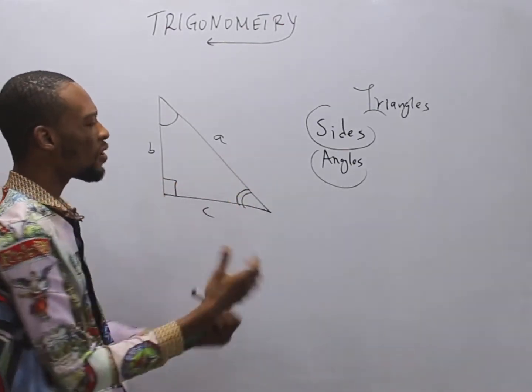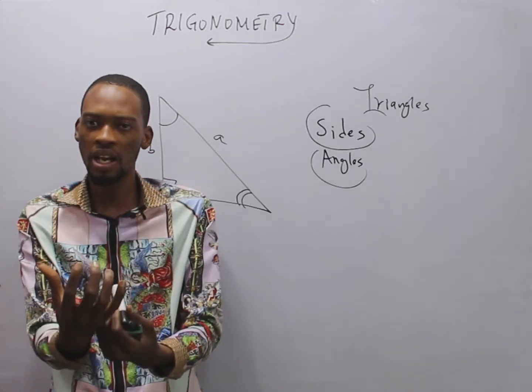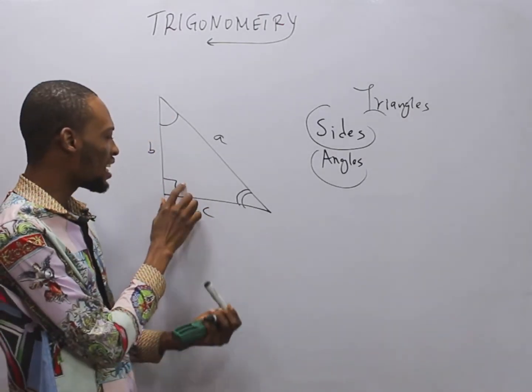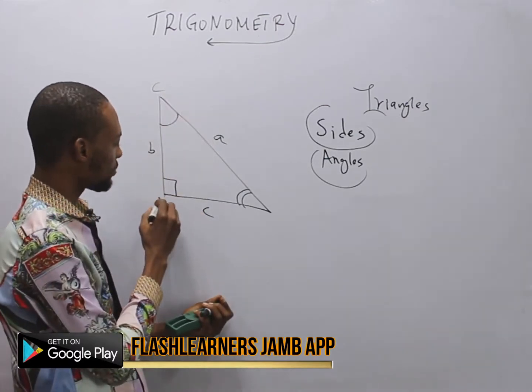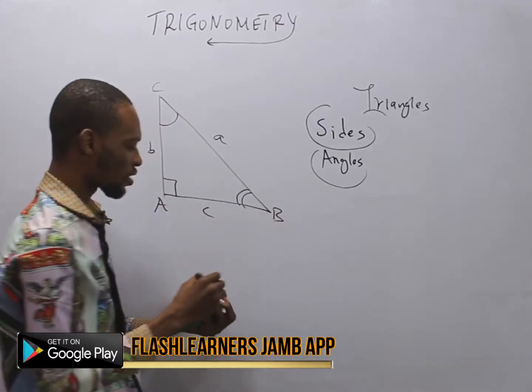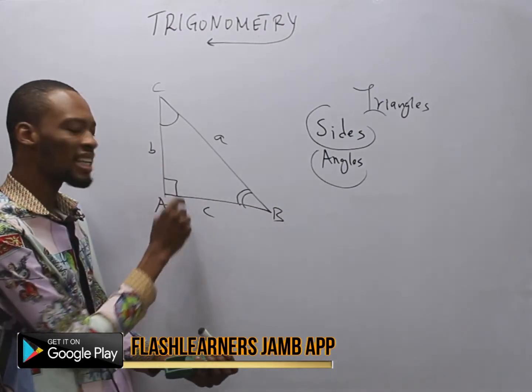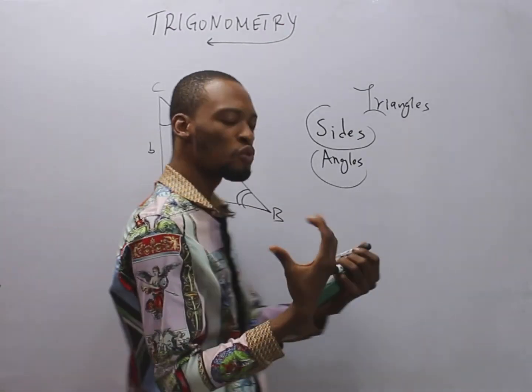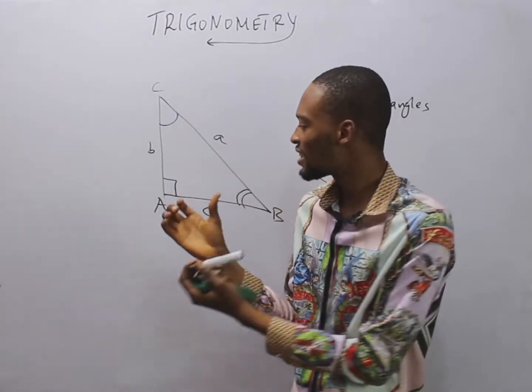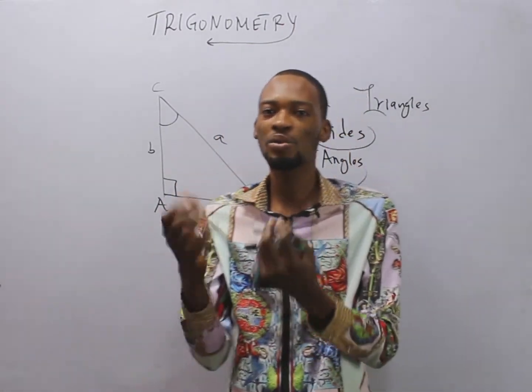This triangle is called right-angled triangle because one of the angles is 90 degrees. So let's here be C, let's here be capital A, let's here be B. So when you see an angle like this, it represents 90 degrees and it's a right angle. So a triangle whose one of its angles is 90 degrees is called right-angled triangle.